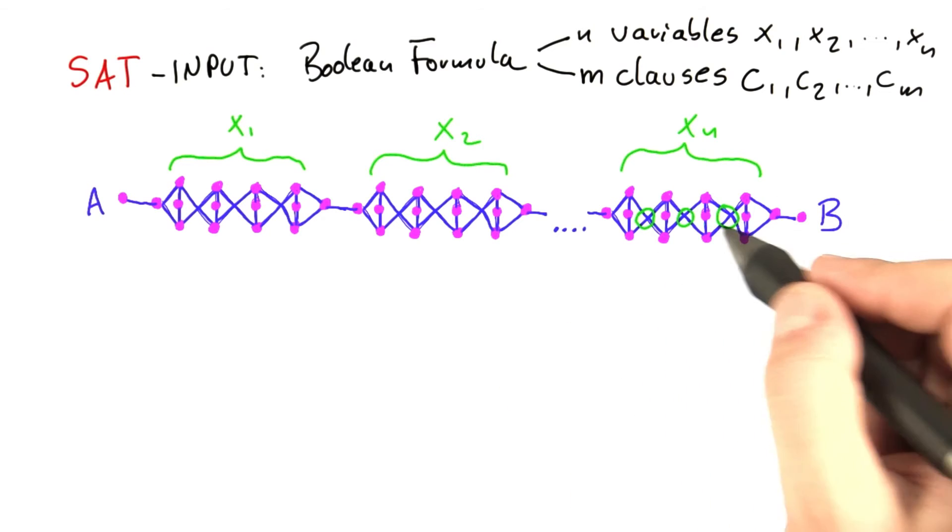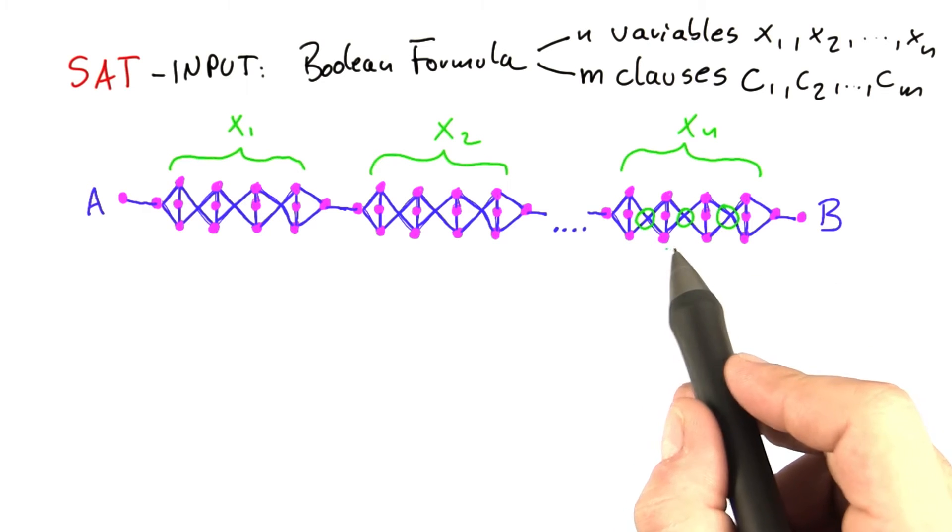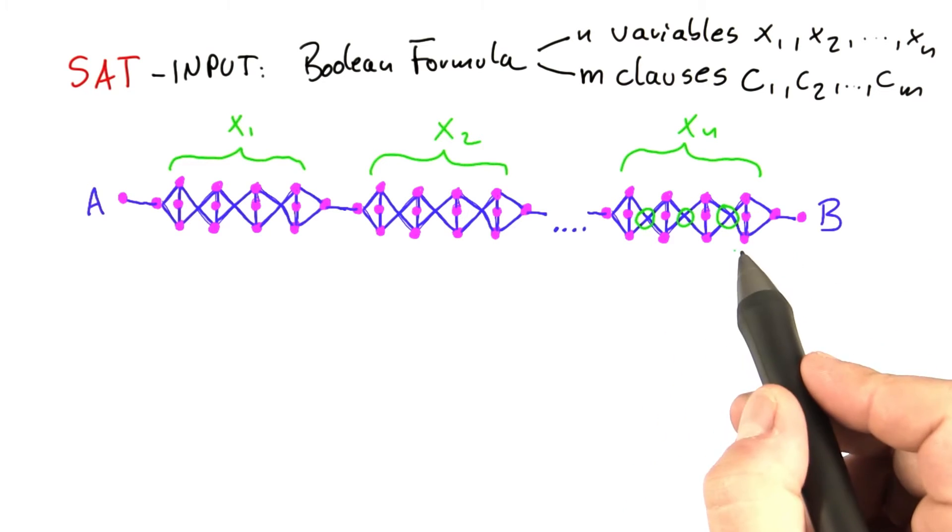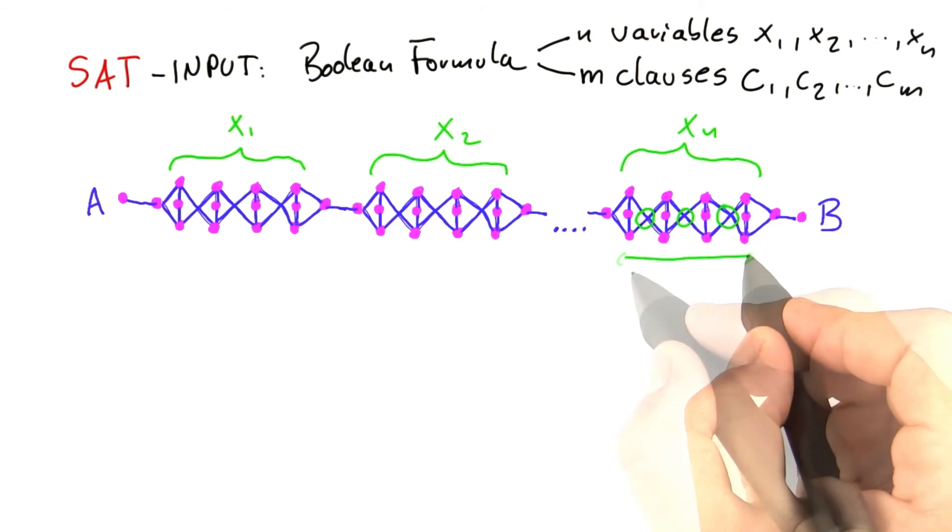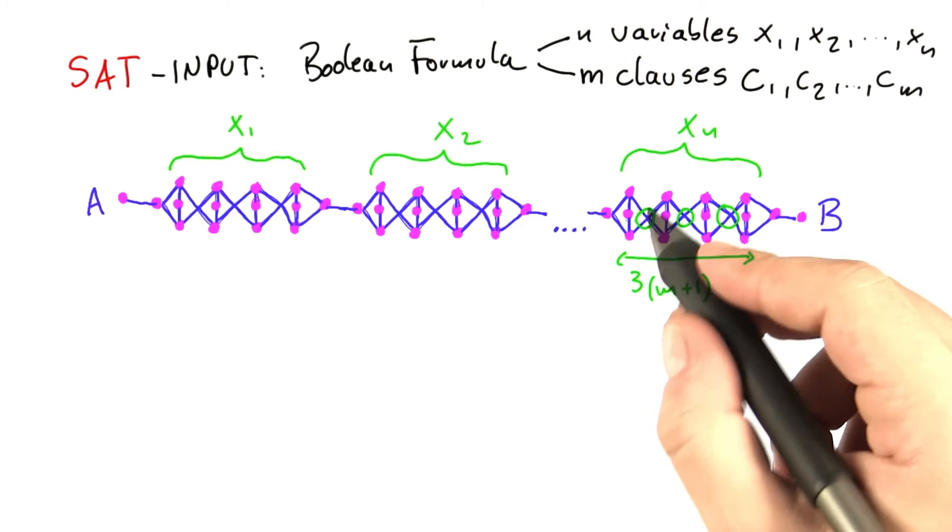Now if we have m of these crossings here, this means that we have m plus 1 of these groups of 3 vertices here. So we have 3 times m plus 1 vertices in this part here.